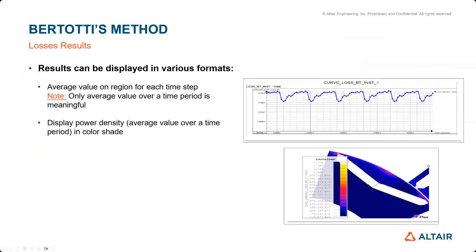When you run this type of iron loss computation, you get results in different formats. You can see the evolution of the losses — mostly the average value over one electrical period — and you can also display the power density, which allows you to display a spatial quantity showing where most of the losses are located.